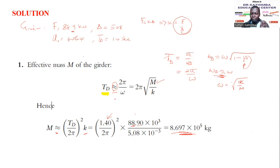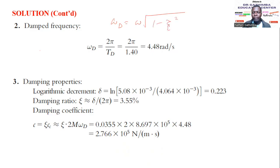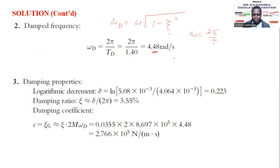The second part is to determine the damped frequency ω_d. This can be done in two ways: ω_d = ω × √(1 − ξ²), or since we already know T_d, we use ω_d = 2π / T_d. Plugging in T_d = 1.4 seconds, we get ω_d = 4.48 rad/s.